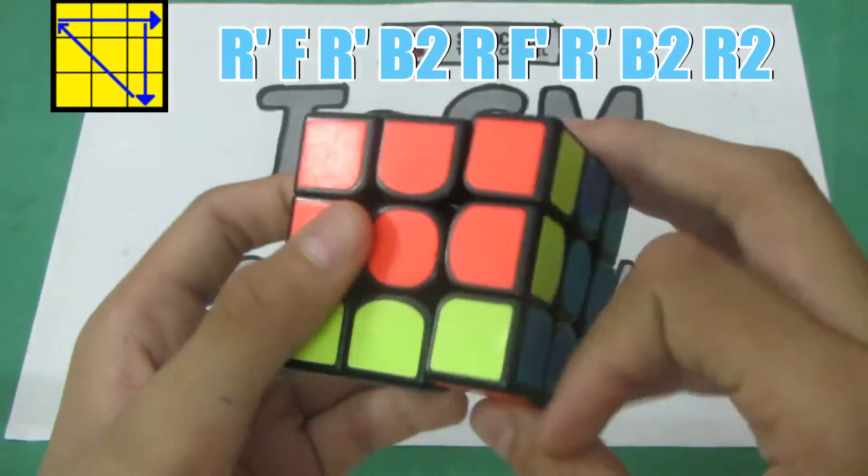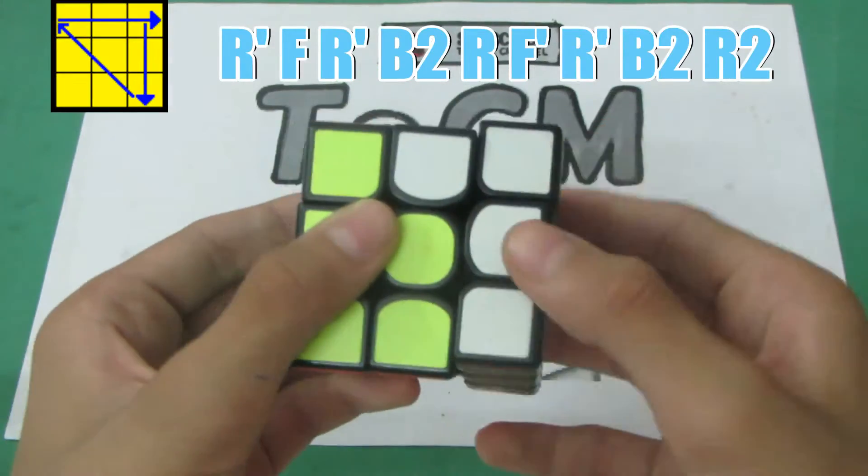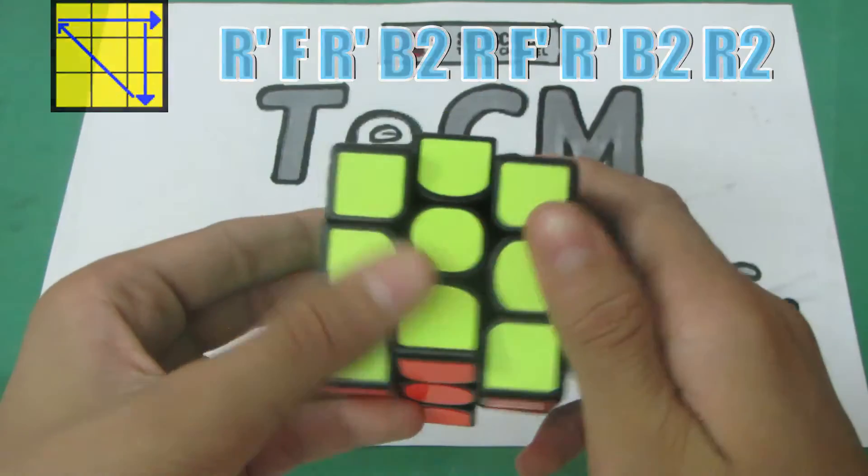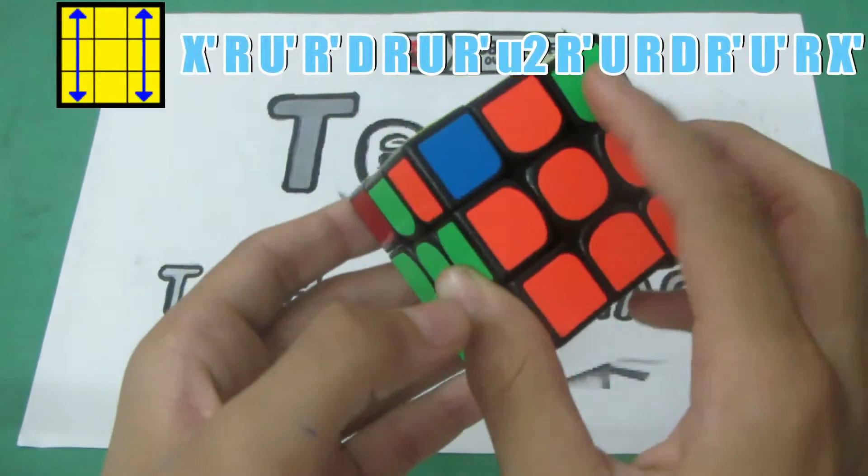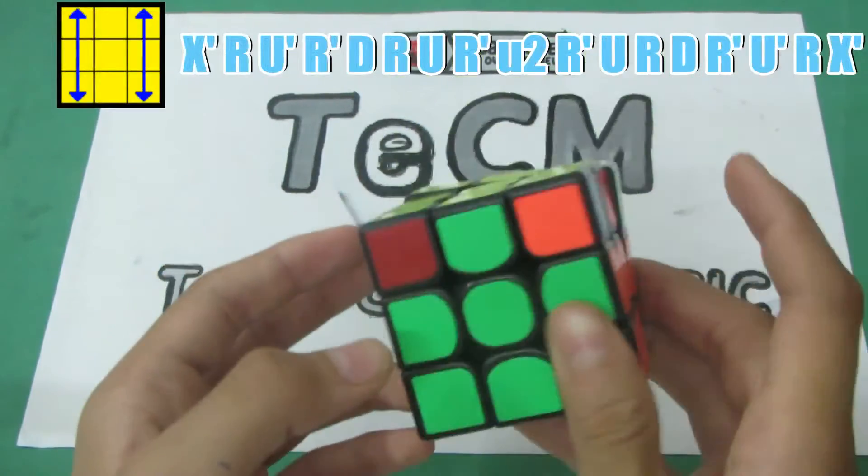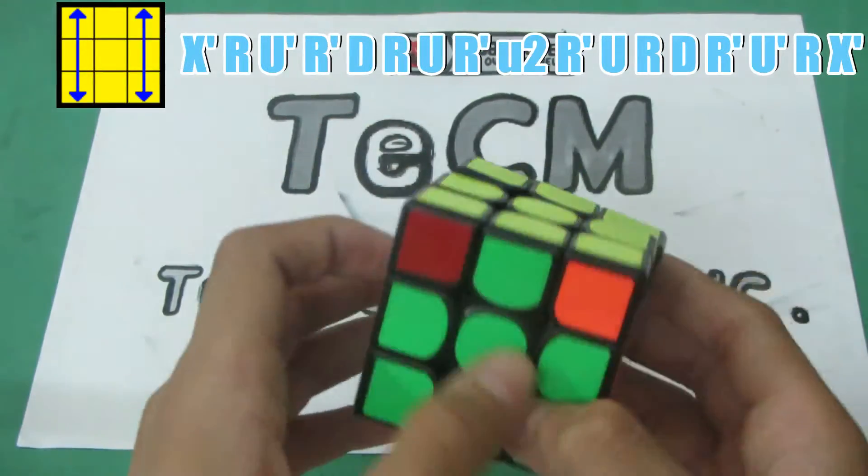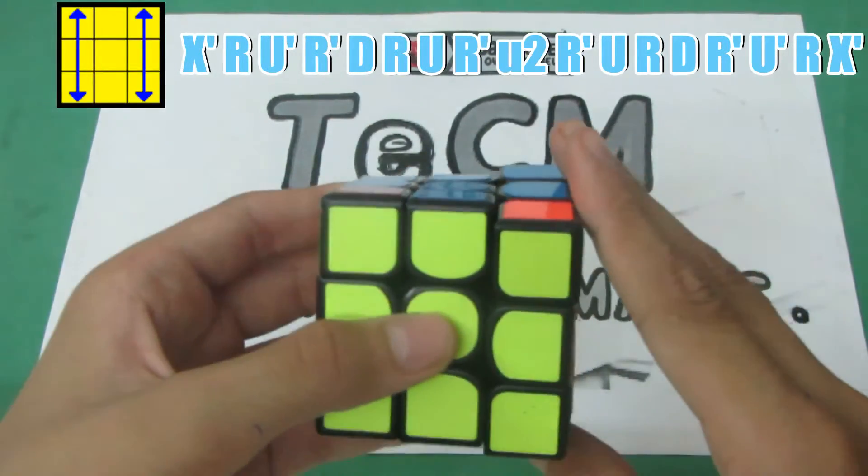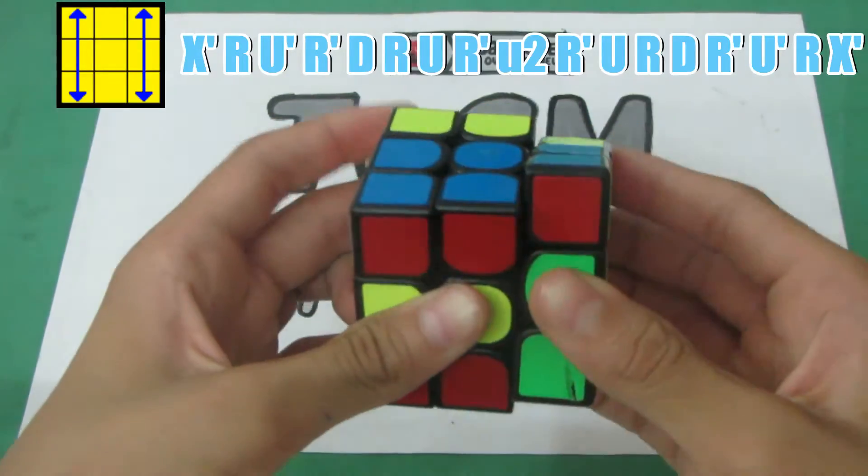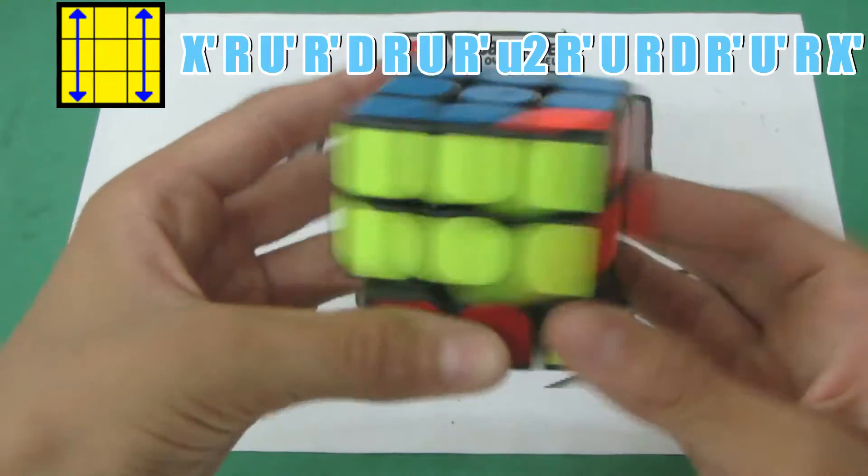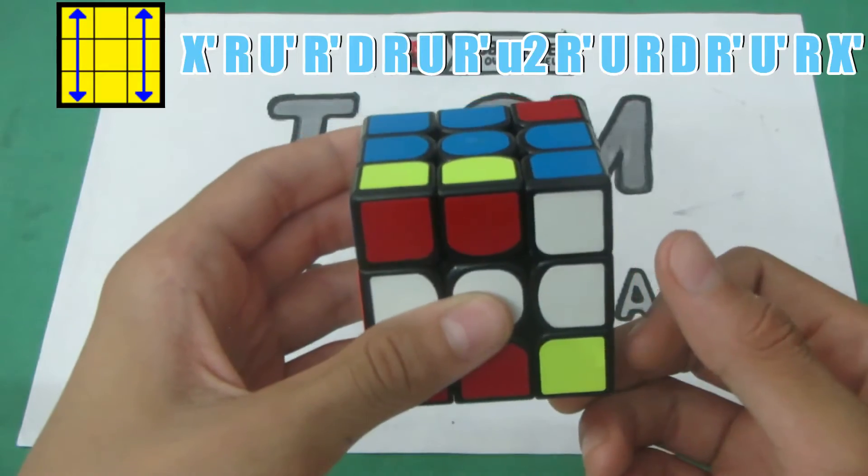Now the second algorithm is this one in which you need to get this corner here and vice versa and this corner here and this one there. The algorithm is x' R U' R' D R U R' D' R U R' D R U' R' D'.